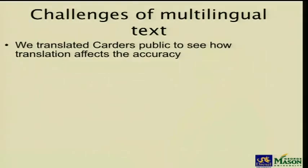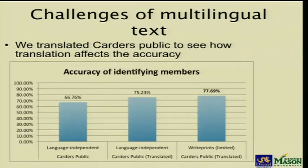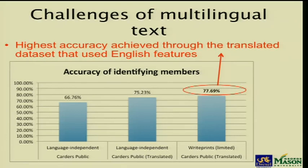So we decided to translate Carders Public into English to see how we can profile members better. Looking at the first bar, the untranslated version of Carders Public achieves 67% accuracy with a language-independent feature set. After translating the dataset and still using language-independent features, accuracy rises to 75%. And using English-specific features such as writeprints, we get the highest accuracy. We had more than a 10% increase in accuracy just from translating the data to English.